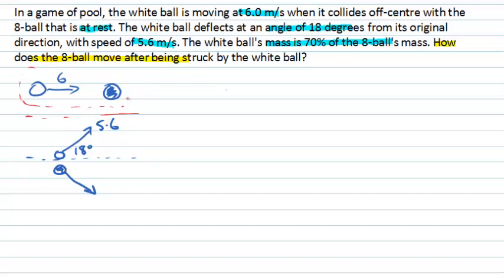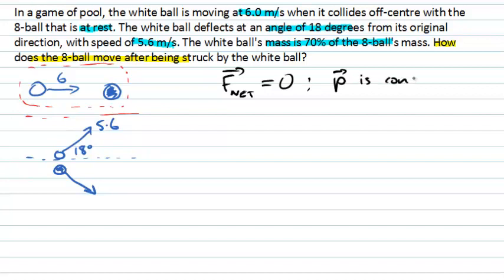But if I think of my system as being both objects together, looking at them on a horizontal table and thinking of them moving in the plane of the pool table, then ignoring friction forces — or applying the collision approximation that says the collision happens over a short time during which the collision force is much larger than any other forces — I can consider friction forces to be negligible. This system then has no net force acting upon it, so the momentum of the system will not change. It's a conserved quantity.